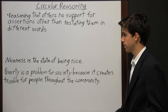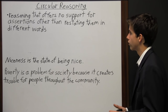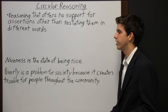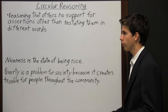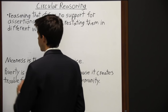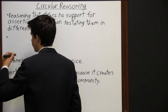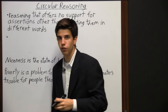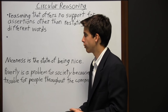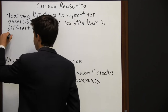More specifically, we can define circular reasoning as reasoning that offers no support for assertions other than restating them in different words. Another way to define this is that circular arguments refer to themselves as evidence of truth. So if you find an argument that refers to itself as evidence of truth, then you know it's a circular argument.